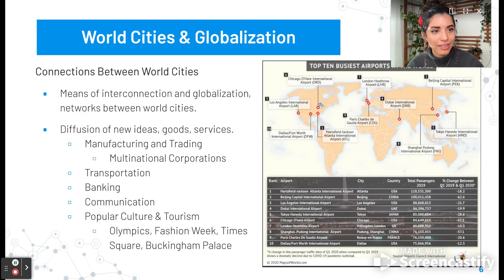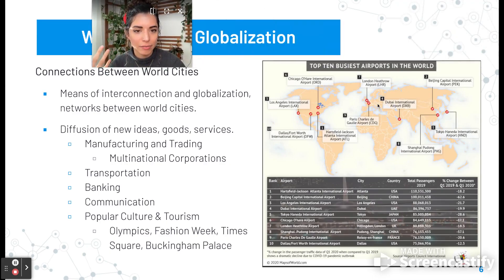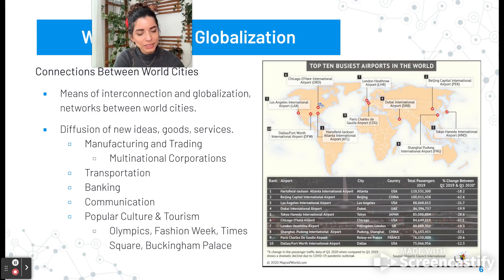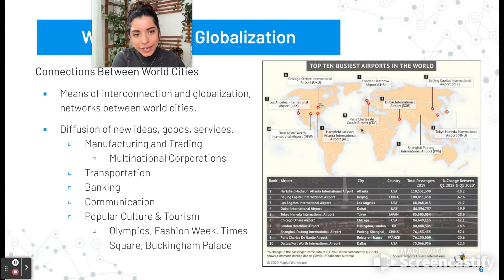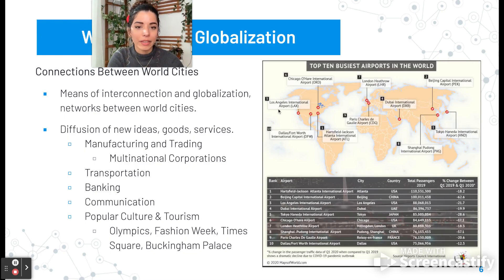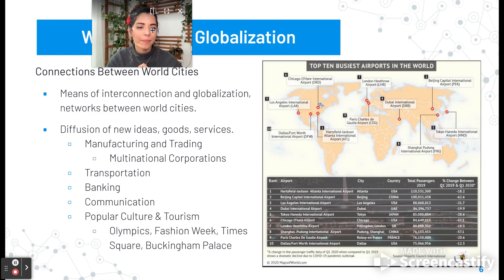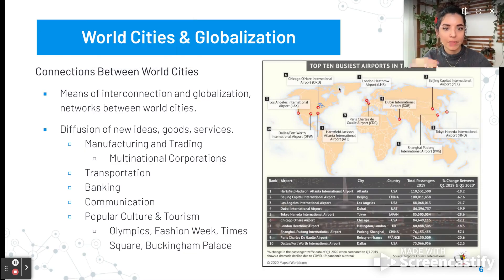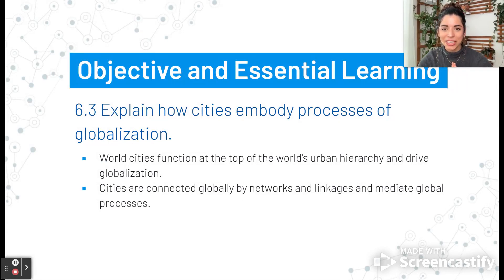Looking at this map of the top 10 busiest airports in the world, they absolutely go hand in hand with some of these world cities. A few of them: Charles de Gaulle in Paris, Heathrow in London, Dubai International, LAX in Los Angeles, and Dallas-Fort Worth International Airport. These are the busiest airports. And that is it for this objective — how cities embody the processes of globalization.